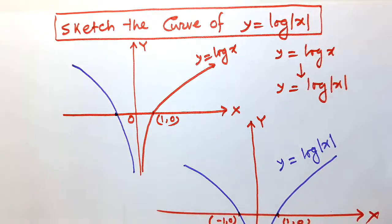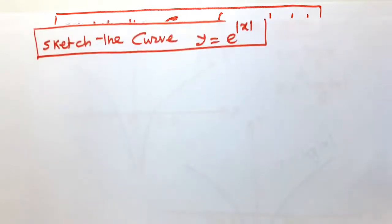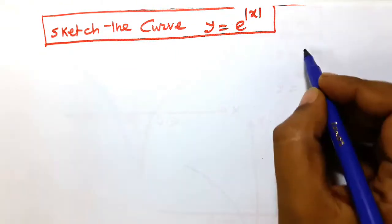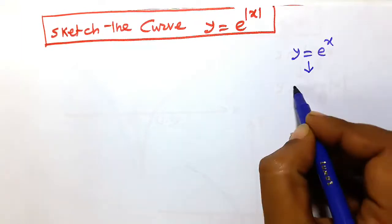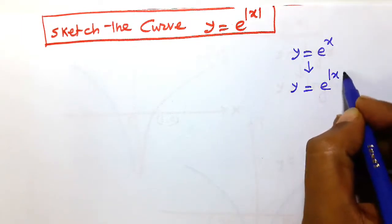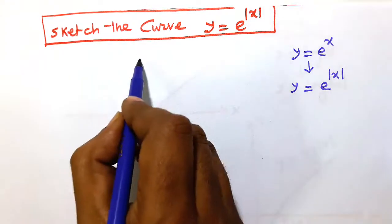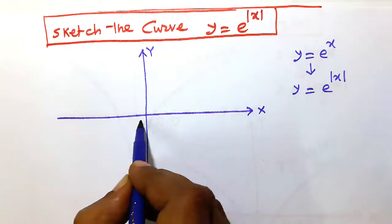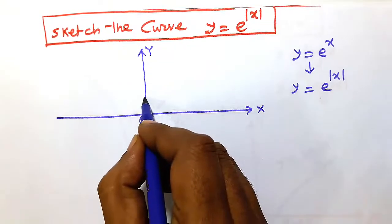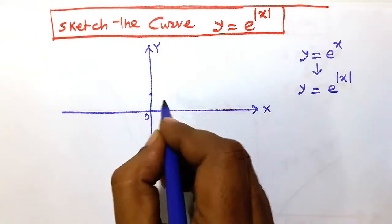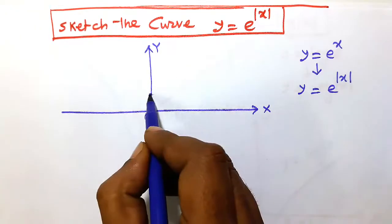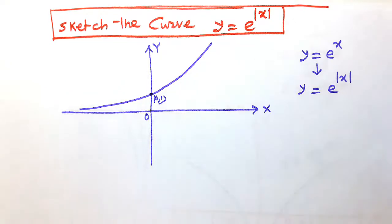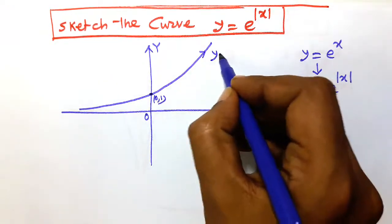Now we shall sketch another curve: y = e^|x|. First draw y = e^x. Setting up the axes with origin O, the point (0, 1) is marked, and the curve of y = e^x passes through this point.